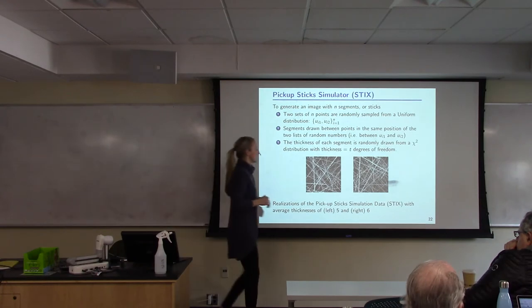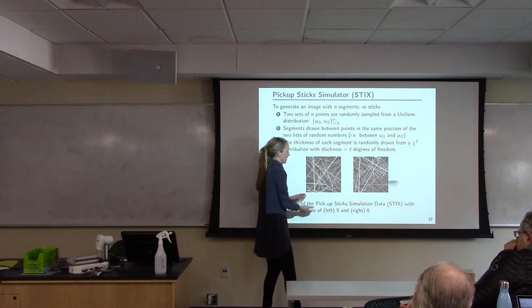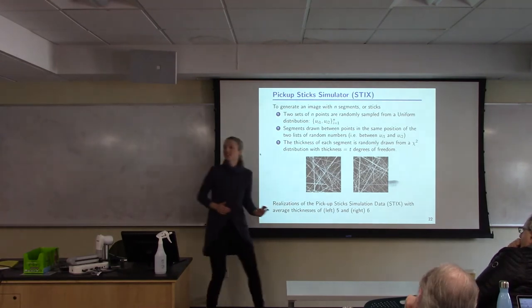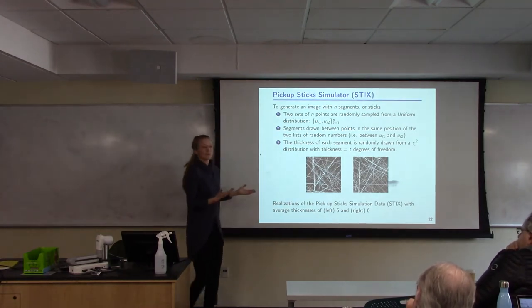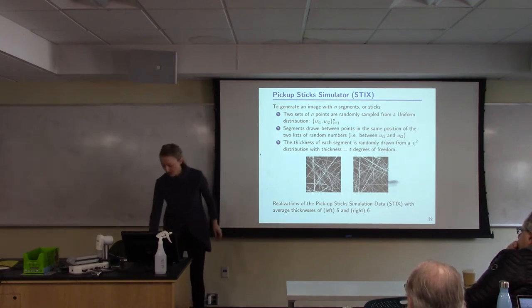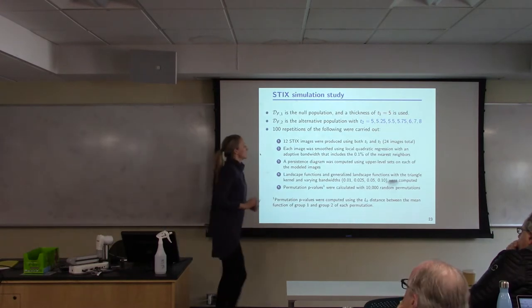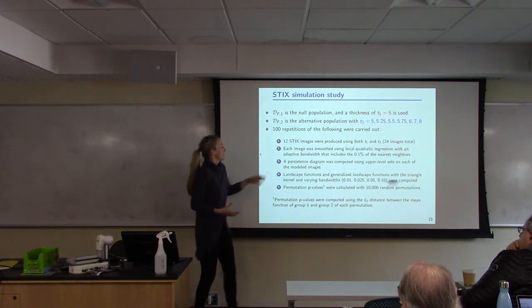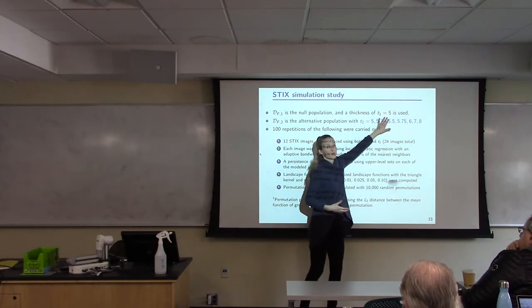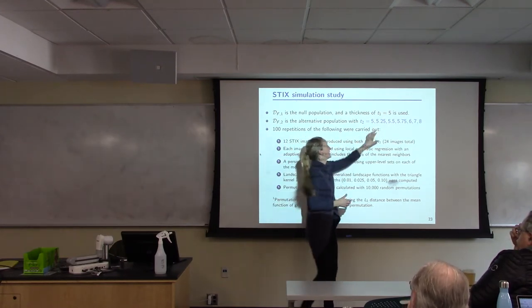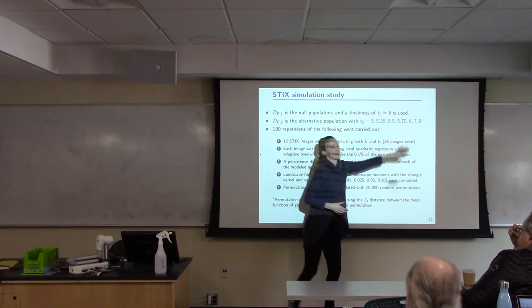So the thickness is drawn, so for one image, the average thickness of the line, I think in this case is five. And then we draw from a chi-square distribution with five degrees of freedom to adjust the width of all the different lines. Okay, so these are just randomly scattered lines. And we wanted to know, could we detect the difference between an image that used an average width of five versus six? So by eye, we maybe couldn't really see much difference. So then going to the persistence diagrams and then going to the functional summaries.